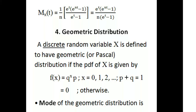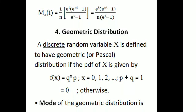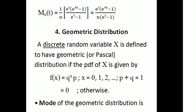Next, we are going to look at the Geometric distribution, also called the Pascal distribution. A discrete random variable x is defined to have a geometric or Pascal distribution if the PDF of x is given by f(x) = q^x · p, where x = 0, 1, 2, 3, ... and p + q = 1.